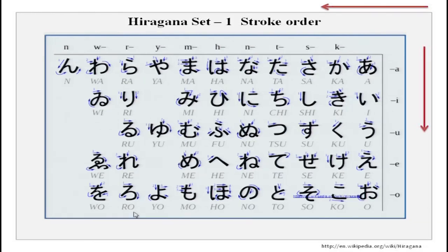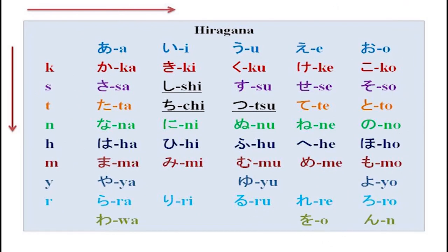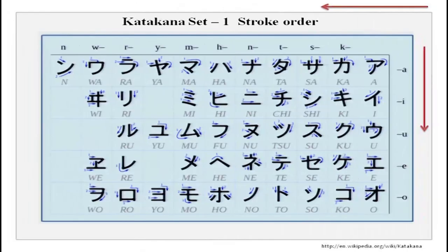The stroke order is given very clearly and you can also go on the net to see hiragana and katakana in different ways of writing. The exceptions are also given and you can revise and practice at home. Katakana, though the pronunciation is the same, has a very different writing system — it is very, very angular, unlike hiragana.